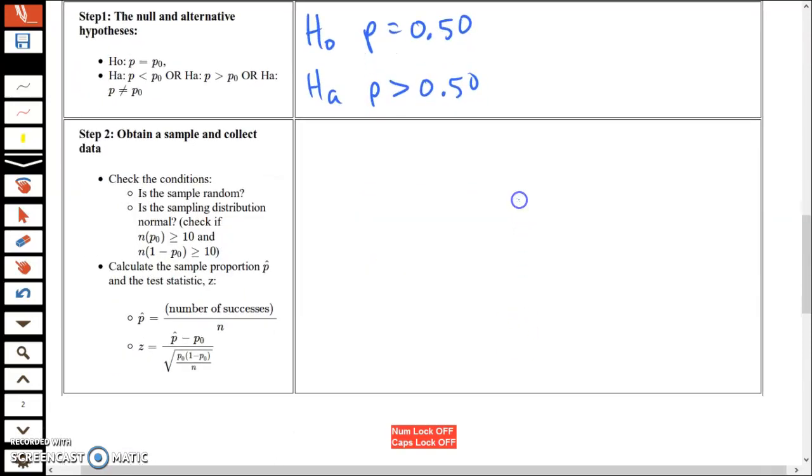Step two: obtain and collect the sample data. Check your conditions. Is the sample random? Yes. Is the sampling distribution normal? Is n times p₀ greater than 10? Yes, n is 1,125 times 0.50, so that's way more than 10. Same thing with n times (1 - p₀). Now we're ready to calculate the test statistics.